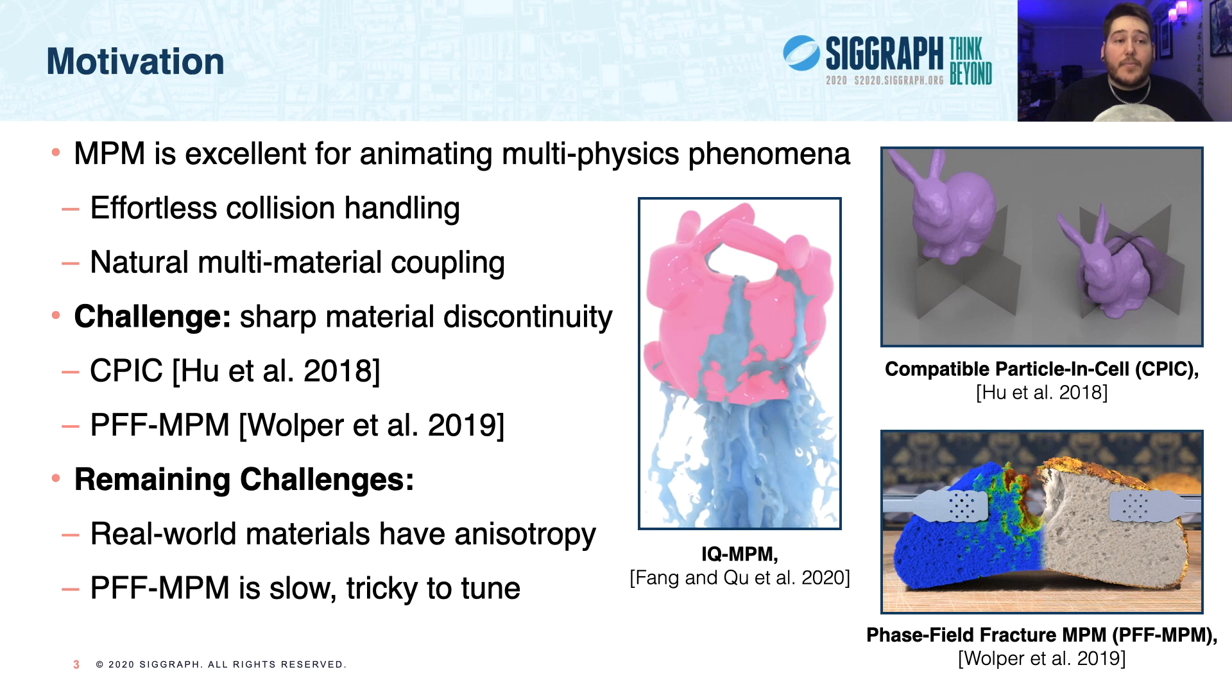However, PFFMPM does introduce its own problems, namely it's designed strictly for isotropic materials and can be slow and tricky to tune. As such, aniso-MPM adopts the continuum damage mechanics focus of PFFMPM, but seeks to support isotropic, transversely isotropic, and orthotropic materials, all while offering better speed and faster parameter setting.